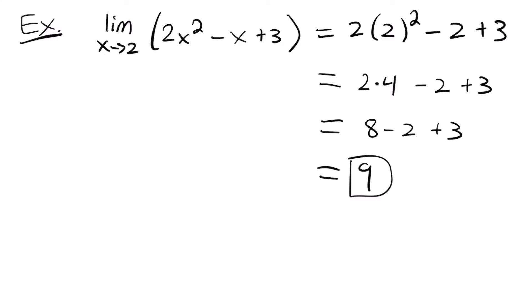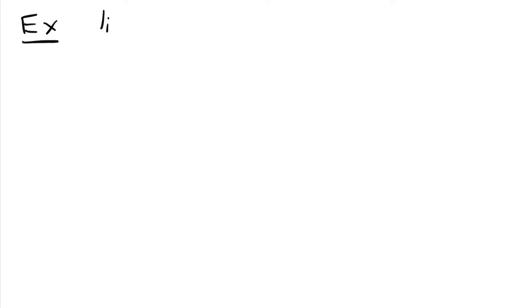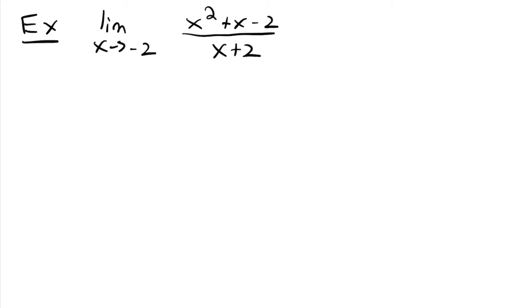Now we're going to look at the more complex methods. We have the limit as x approaches negative 2 of the function x squared plus x minus 2, all over x plus 2. Like we should do with every limit, we should always start by plugging in the value of x that we're approaching and see what happens. If we get an indeterminate form, then we know we need to manipulate the function. But if we just get a nice answer, we don't have to do anything.